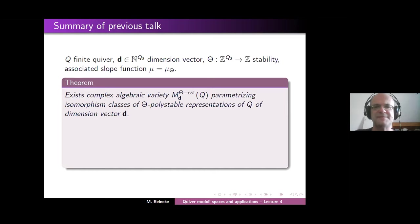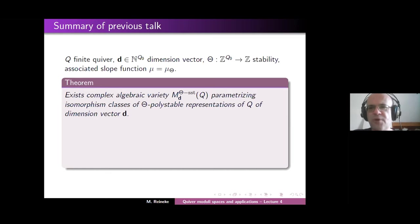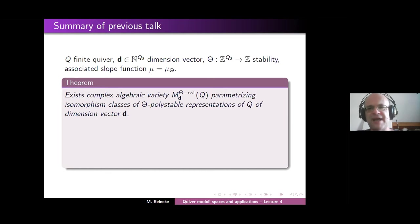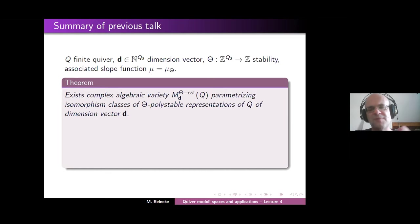We saw there are good reasons that we cannot get better than parametrizing the poly-stable representations, because geometric invariant theory is only able to parametrize closed orbits. This variety exists, and we produced it by considering the proj of a certain ring of semi-invariants. These semi-invariants will not appear again today, but we now look at the structural properties of the varieties we get.